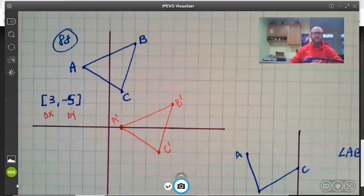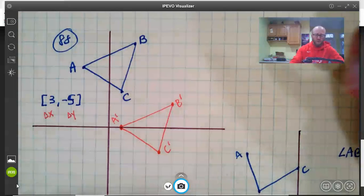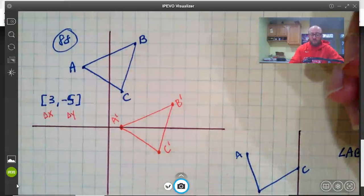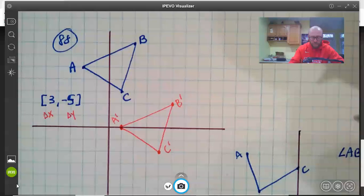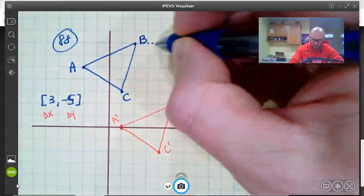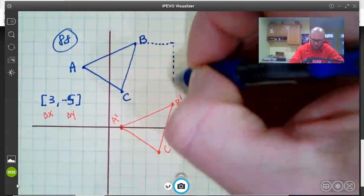The second question here is how far did each point move, or how far did the shape move in general, but more specifically how far did each individual point move. Well from B to B prime, it is over three and down five.